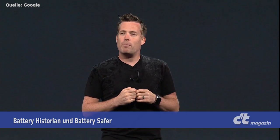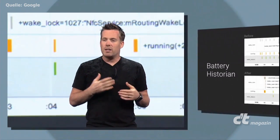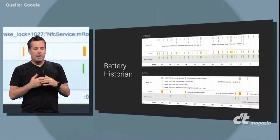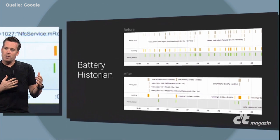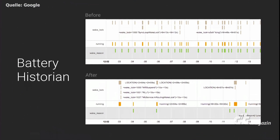We created a tool called Battery Historian, and it helps you visualize, on a time axis, the battery usage information. You can correlate battery discharge with what was happening to the device at the time. Here's an example from a real device. On the top graph, you can see the radio waking up approximately every 20 seconds. Battery Historian helped us quickly identify the issue so we could fix it and improve battery life.